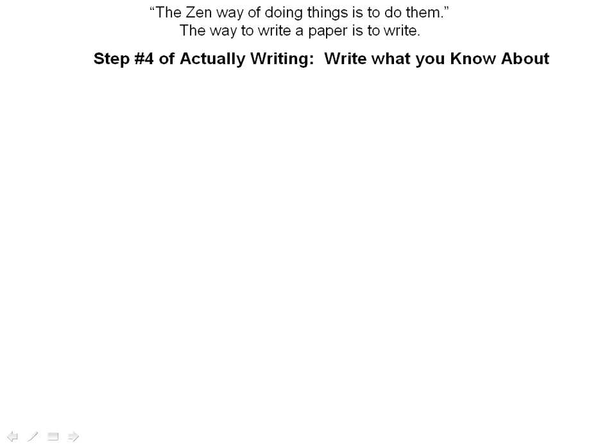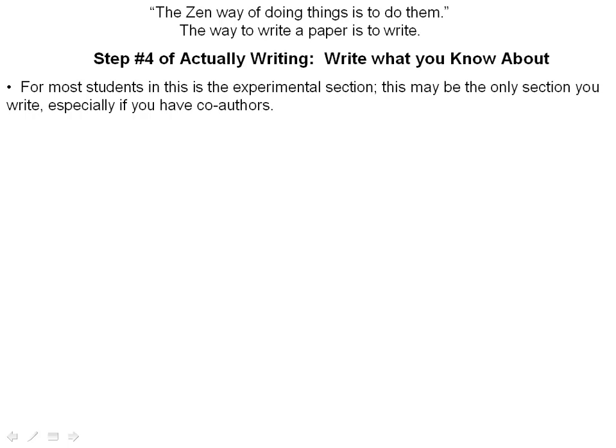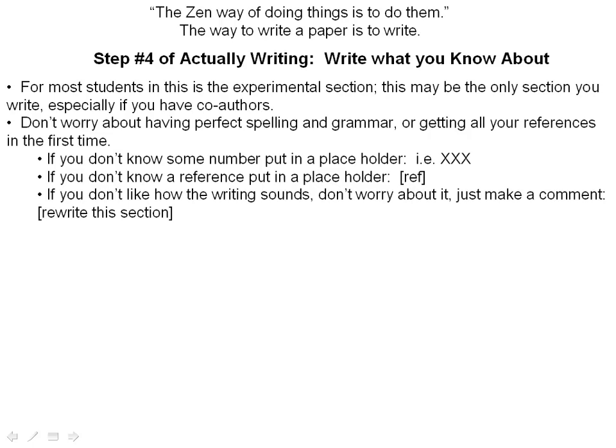The fourth step to actually write a paper is to write what you know about. For most students starting out as graduate students, this is the experimental section — and in fact, it may be the only section you're going to write because your advisor is going to write the rest of the paper. That's fine; you'll get more practice later on.